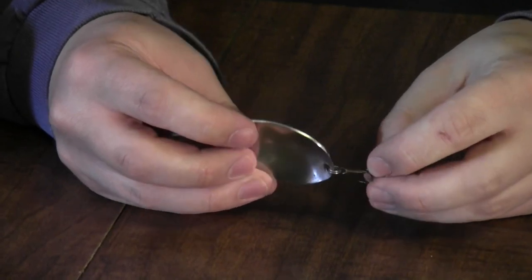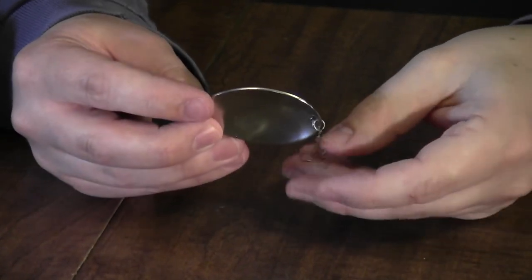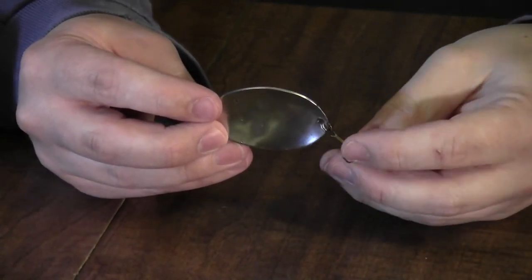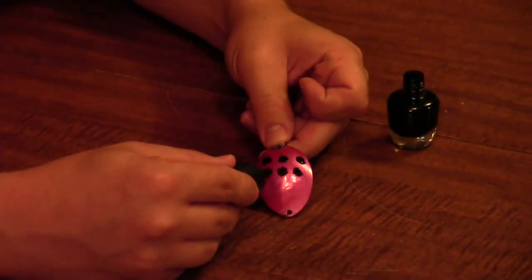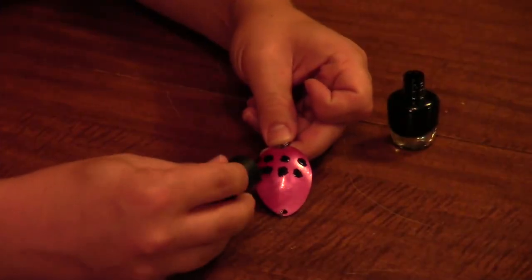Once you have the hook attached, you might want to take it out and test it just to make sure it swims well, that you don't have to change the shape of it at all. Once you've done that, you're ready to go ahead and paint it.